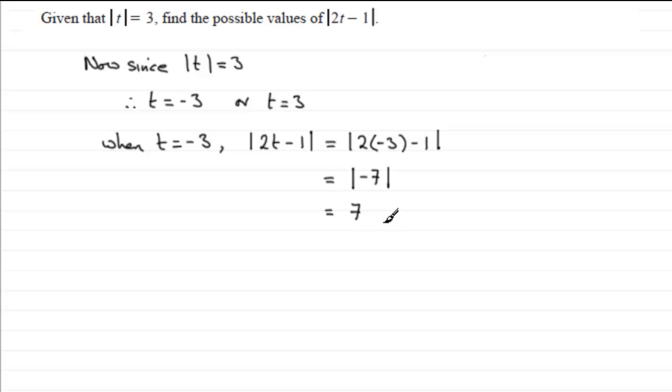And we've got the other value of t to look at now. So we can say that when t equals 3, again we've got the mod of 2t minus 1. Well, that's going to be equal to the mod of 2 times 3 and then minus 1, so that's going to be equal to the mod of 6 minus 1, the mod of 5. And 5 is a positive value anyway, so it's just going to be 5. So there we go, we've got two values then: we've got 7 and we've got the 5.